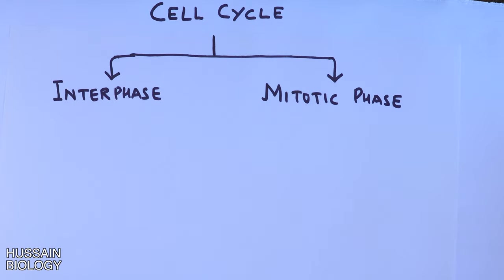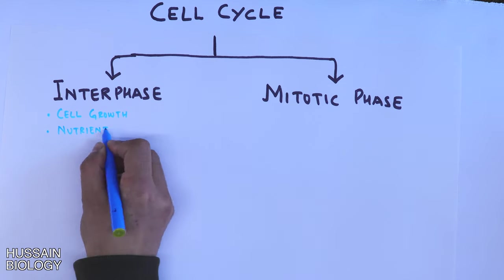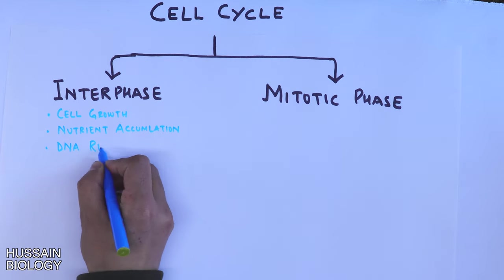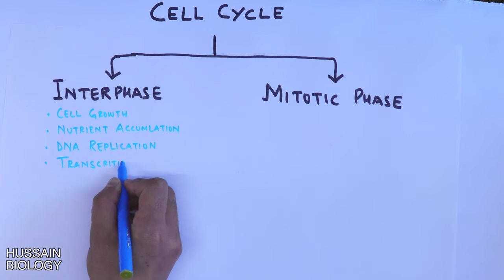During the interphase stage of the cell cycle, the cell grows. There is nutrient accumulation, DNA replication, transcription, and translation. We also have some checks like quality control or DNA checks.